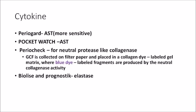For detecting cytokines and enzymes: Perio Guard detects AST (aspartate aminotransferase). Pocket Watch also detects AST, but Perio Guard is a more sensitive method. Perio Check detects neutral proteases like collagenases. The test works by collecting GCF on a filter paper and placing it in a collagen dye labeled with a blue dye; when neutral collagenase activity in the GCF releases the entrapped blue dye, blue coloration confirms the presence of collagenase.